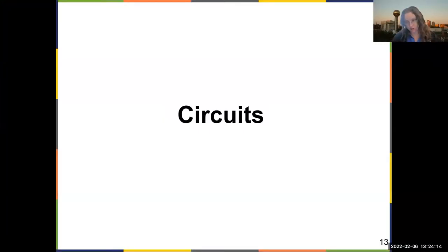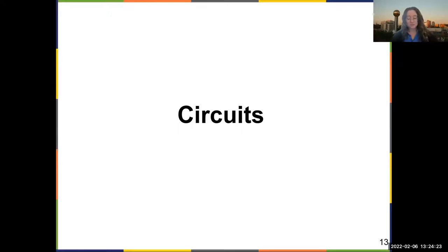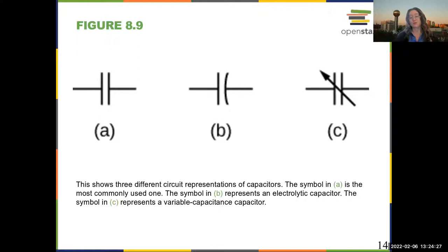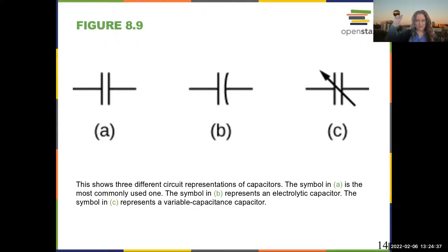The reason we're learning all of this is because we want to learn about circuits. We're going to have a whole chapter on direct current circuits in a little bit, but we're going to introduce roughly what happens. You'll eventually be drawing circuit diagrams where you're basically sketching what the circuit looks like. A circuit diagram is a way of designing the circuit — it doesn't necessarily look physically like the circuit.